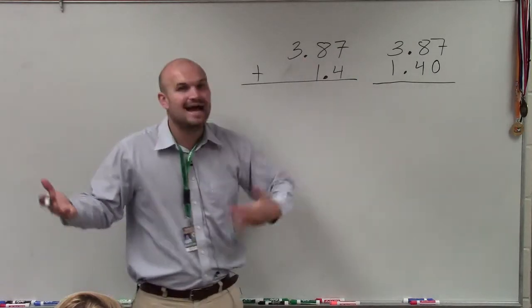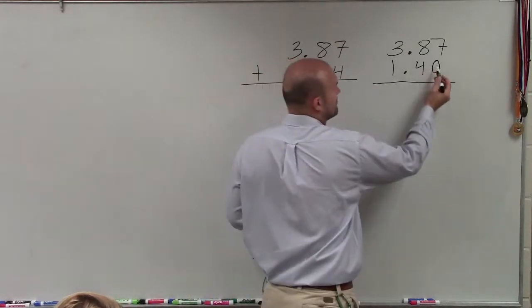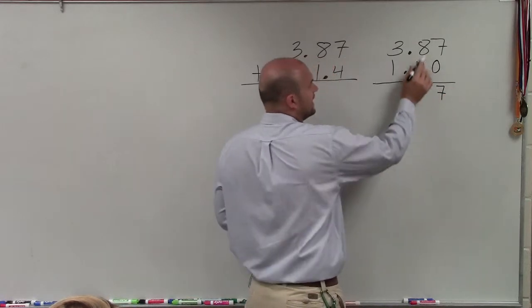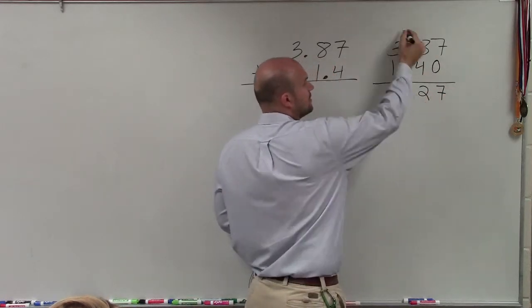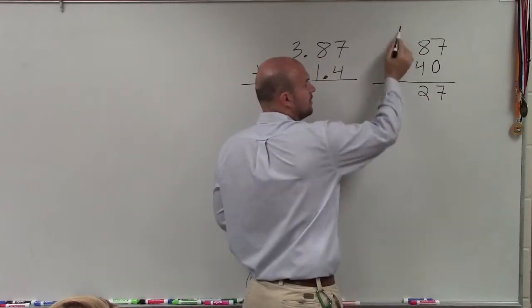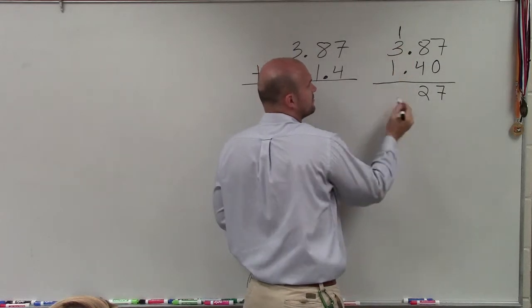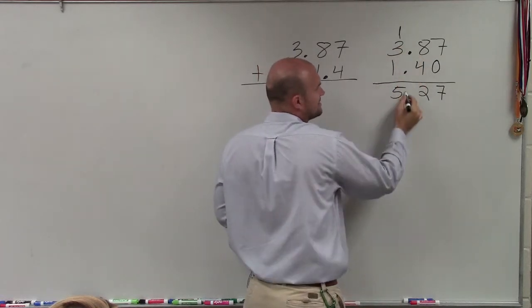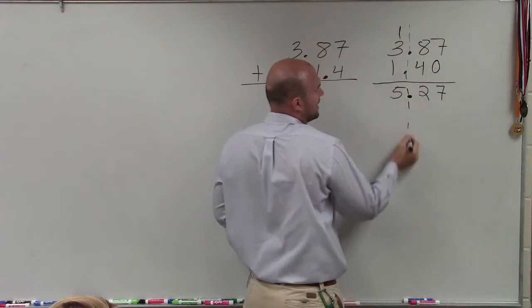And we pretty much just add and subtract just like we did for multi-digit numbers. 7 plus 0 is 7. 8 plus 4 is 12. Carry over the 1. 1 plus 3 plus 1 is going to be 5. The decimal point just remains in that vertical line.